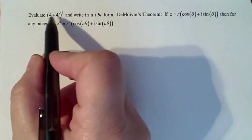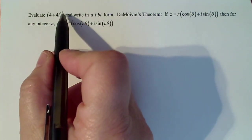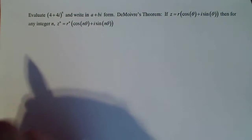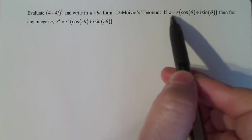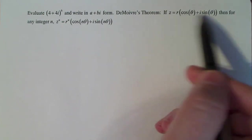If I take a look at my original problem here, 4 plus 4i to the sixth, that's a sixth, it looks really tiny, but it is. I need to rewrite, if I use DeMoivre's theorem, I need to rewrite that complex number in polar form.